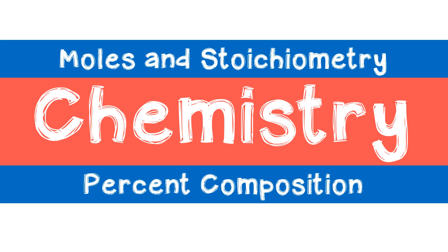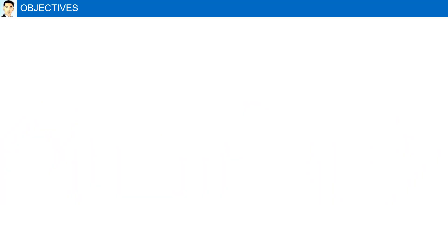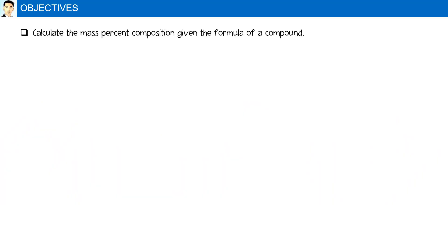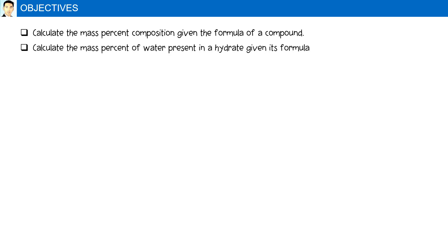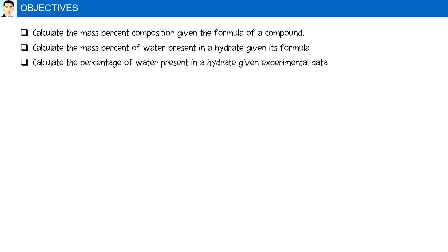Percent Composition. Objectives: Calculate the mass percent composition given the formula of a compound. Calculate the mass percent of water present in a hydrate given its formula. And finally, calculate the percent of water present in a hydrate given experimental data.